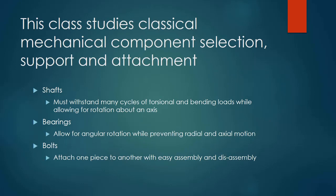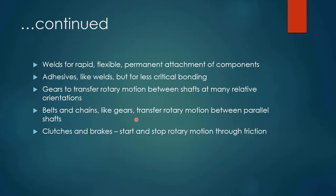This class studies all sorts of classical mechanical component selection, support, and attachment. We're going to look at shafts, which must withstand many cycles of torsional and bending loads while allowing for rotation about an axis. We support those shafts with bearings that allow for angular rotation while preventing radial and axial motion. We have to attach those bearings to a frame using bolts for easy assembly and disassembly. We could also weld things for rapid, flexible, permanent attachment of components, or use adhesives — like welds but for less critical loads. Gears transfer rotary motion between shafts at many relative orientations. Belts and chains, like gears, transfer rotary motion between parallel shafts. Clutches and brakes start and stop rotary motion through friction.